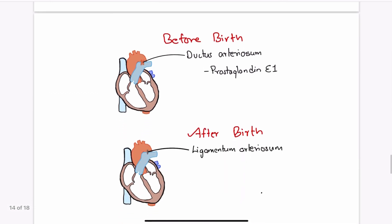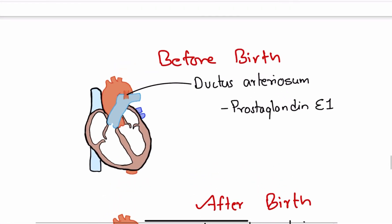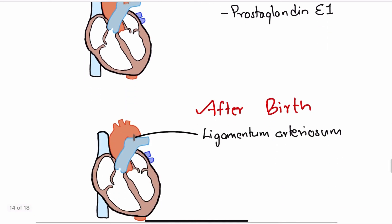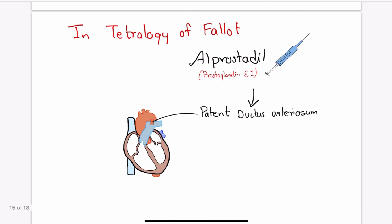Now before coming to management section I would like to point out something. Babies during their uterine stay have a connection between aorta and pulmonary trunk. This is called ductus arteriosus. The patency of ductus arteriosus is maintained by prostaglandin E1 which is formed by placenta. After birth when the placenta is removed the ductus arteriosus collapses and forms ligamentum arteriosum. But in babies with Tetralogy of Fallot, L-prostadil which is a prostaglandin E1 is administered to maintain the patency of ductus arteriosus after birth.